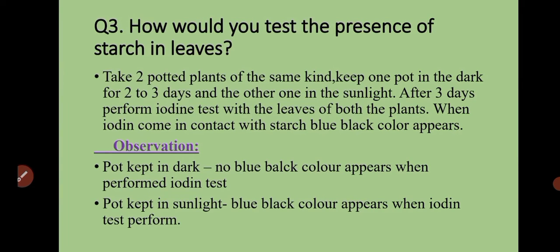Question number three is: how would you test the presence of starch in leaves? To test starch presence in a leaf, we perform an experiment. Take two potted plants of the same kind — keep one pot in the dark for two to three days and the other in sunlight. After three days, perform the iodine test with the leaves of both plants. When iodine comes in contact with starch, a blue-black color appears.